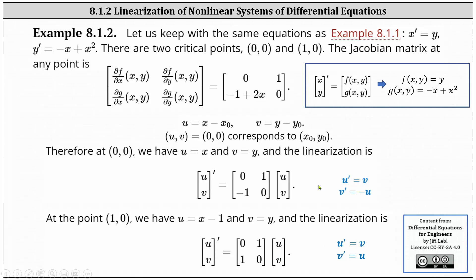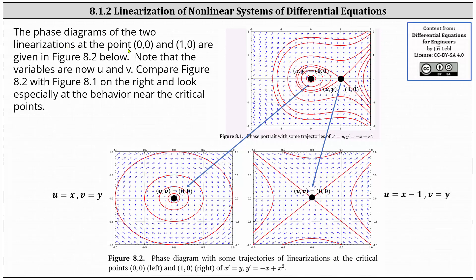It is important when given the linearization that we indicate the expressions for u and v. Let's take a look at this graphically. The phase diagram of the two linearizations at the points (0, 0) and (1, 0) are given in figure 8.2. Note the variables are now u and v, and the point (u, v) is always the origin (0, 0). Comparing to the phase diagram for the original system, the linearization at (0, 0) is a good approximation of the phase diagram around (0, 0), and the linearization at (1, 0) is a good approximation of the original phase diagram at (1, 0). I hope you found this helpful.